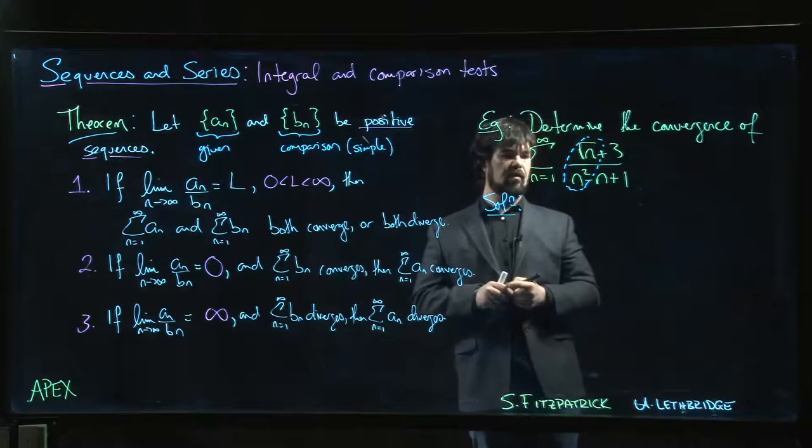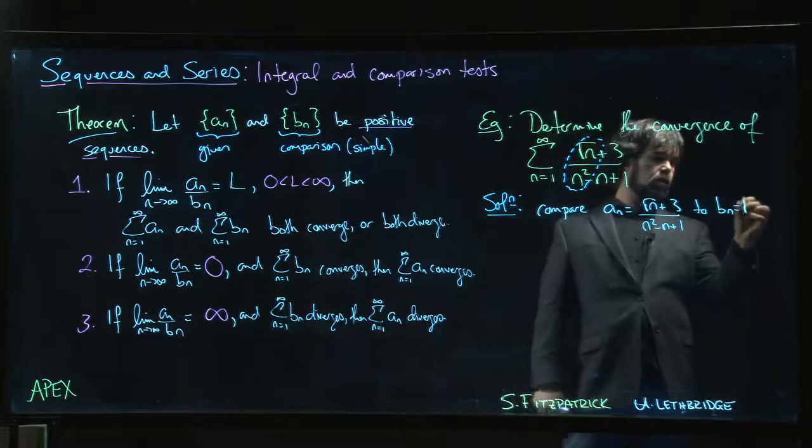And so we say, let's compare. So we want to compare a_n, which is root n plus 3 over n squared minus n plus 1, to b_n, which will be root n over n squared.